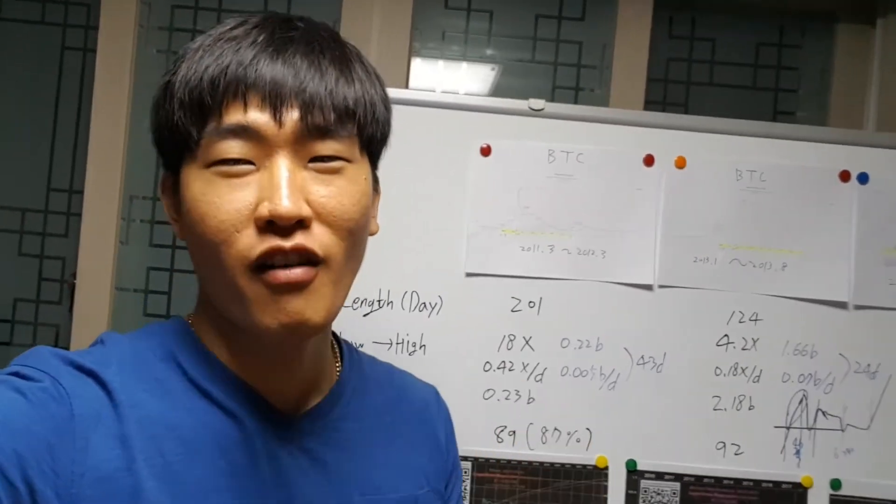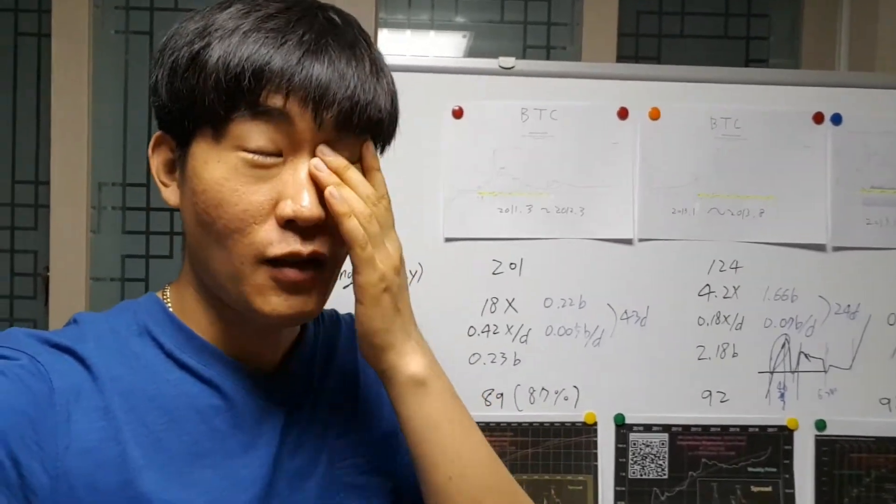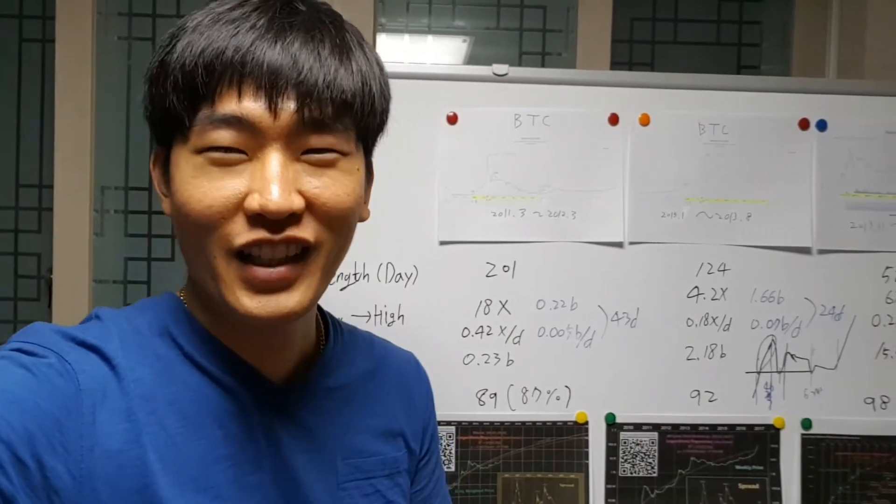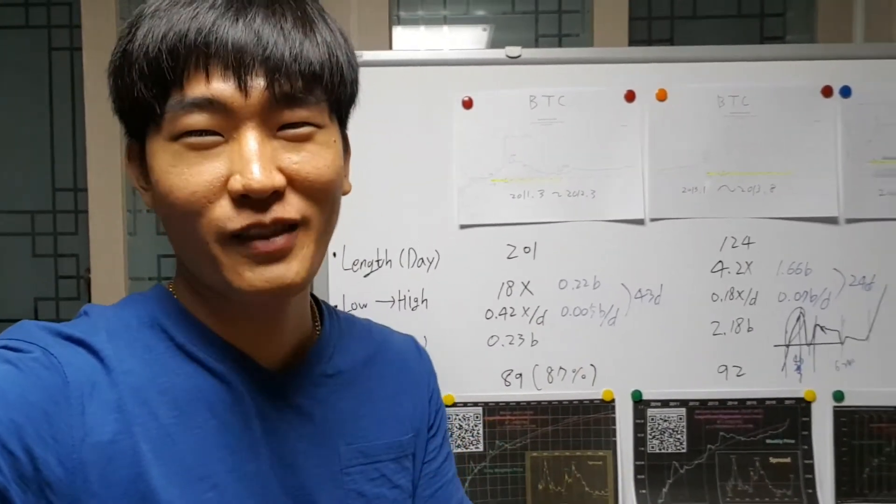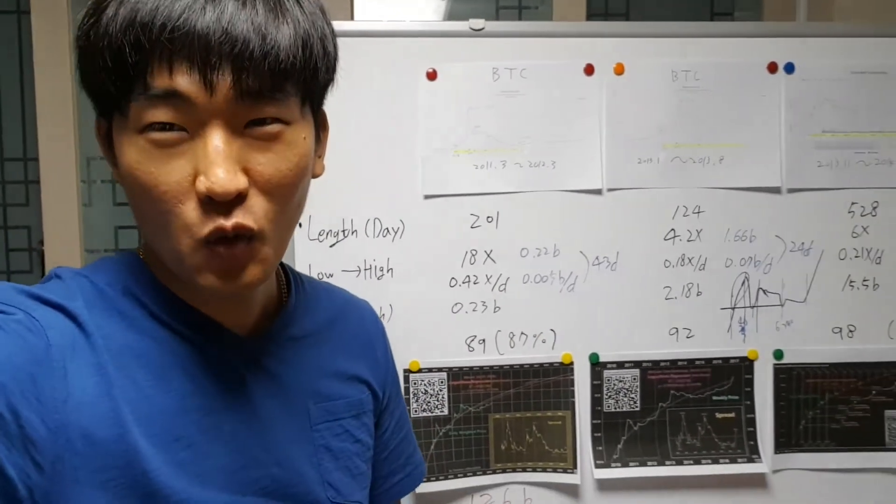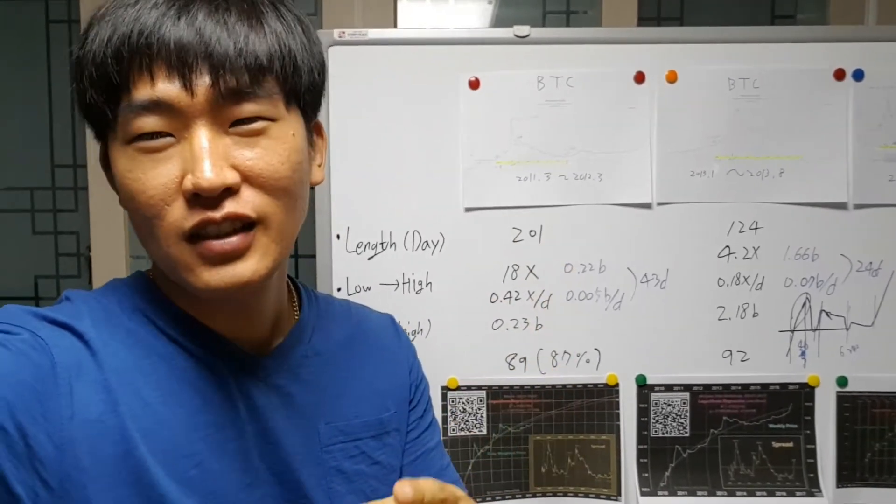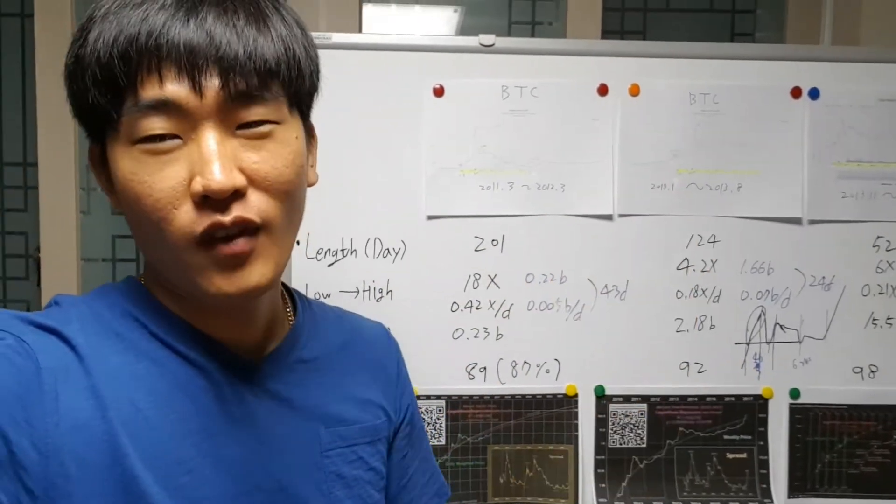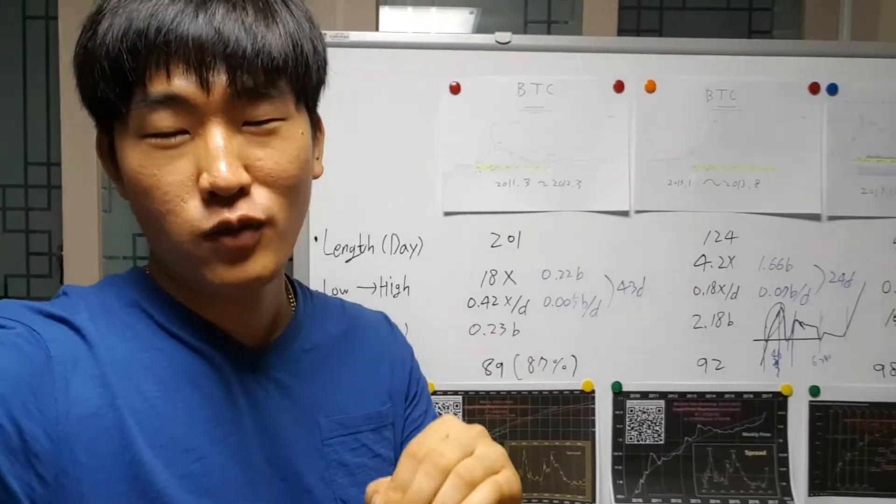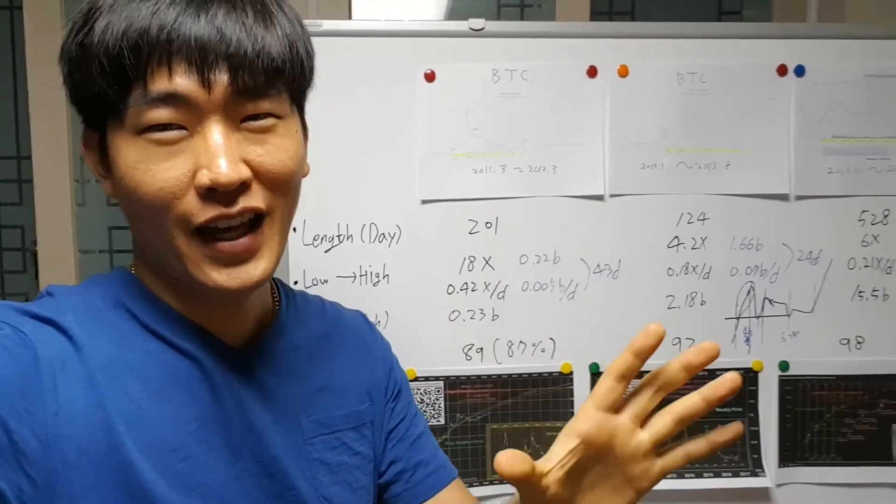But I was too scared and I even convinced my brother to sell everything. So we sold everything. We only made 2x but it actually went up and from ICO price it went up to 6x.